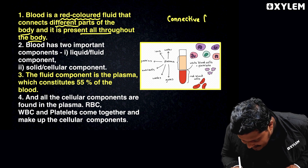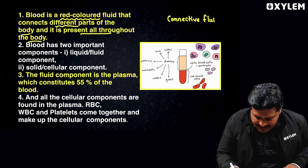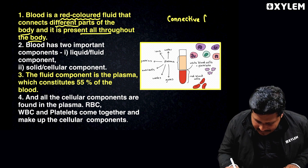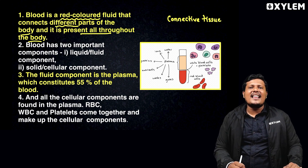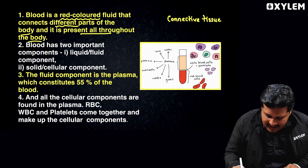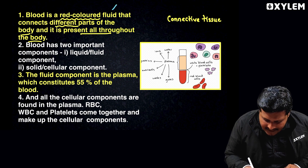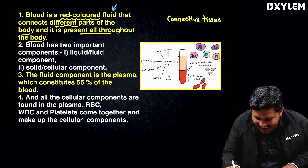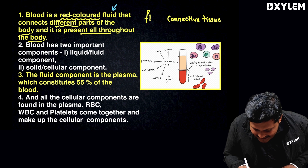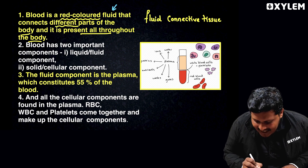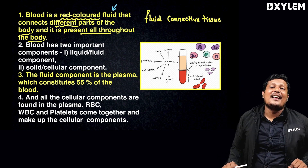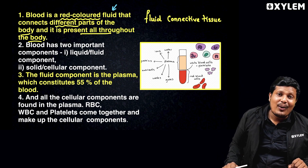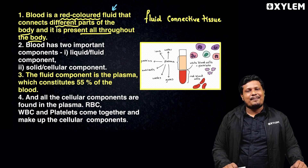Blood is a connective tissue. Blood is a fluid connective tissue. It is a fluid connective tissue — that is what we say. Blood is fluid connective tissue.